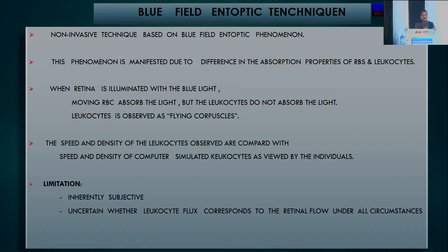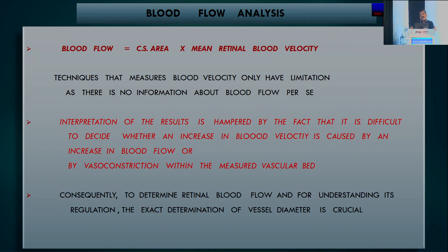The blue field entoptic technique is non-invasive, based on the blue field entoptic phenomenon arising from the difference in absorption properties of RBCs and leucocytes—when the retina is illuminated with blue light, moving RBCs absorb light while leucocytes do not, appearing as flying corpuscles. The speed and density of observed leucocytes are compared to computer-simulated leucocytes; however, it is inherently subjective. For blood flow analysis: techniques measuring velocity only have limitations since an increase in velocity could reflect increased blood flow or vasoconstriction, making exact determination of vessel diameter crucial for knowing the exact blood volume transmitted.